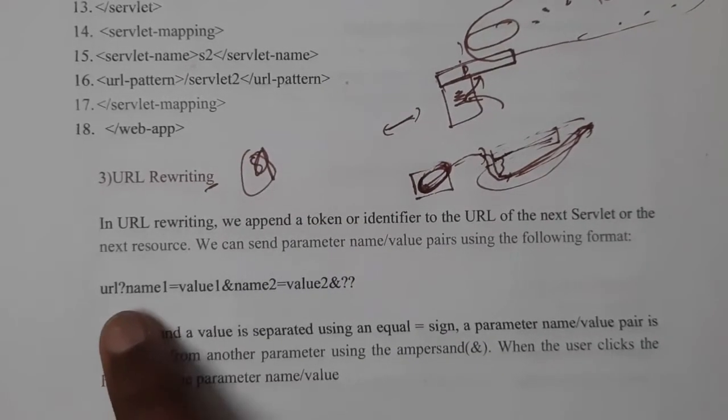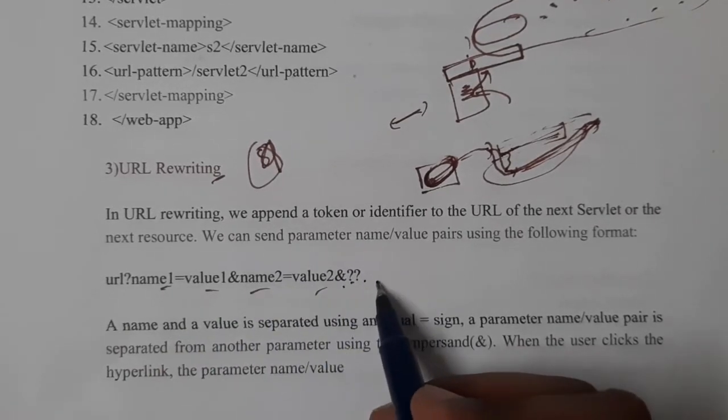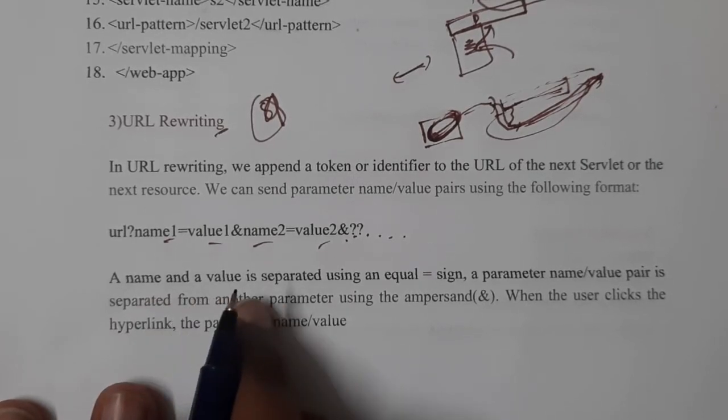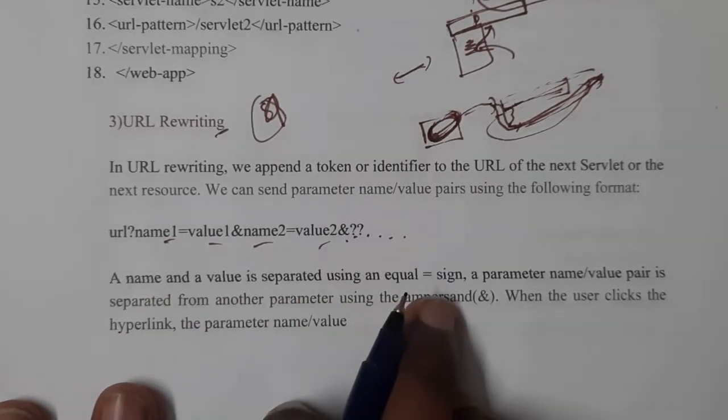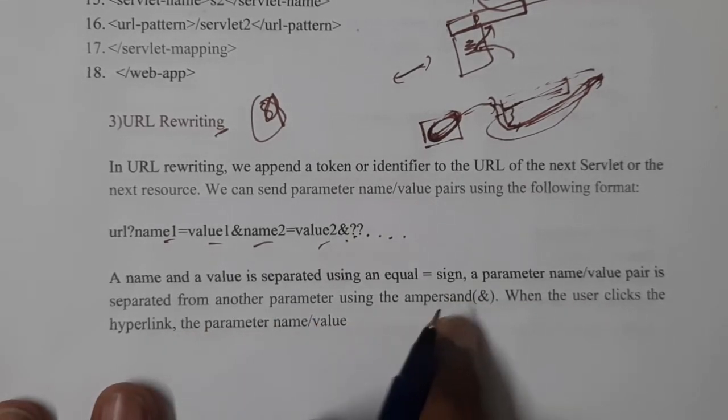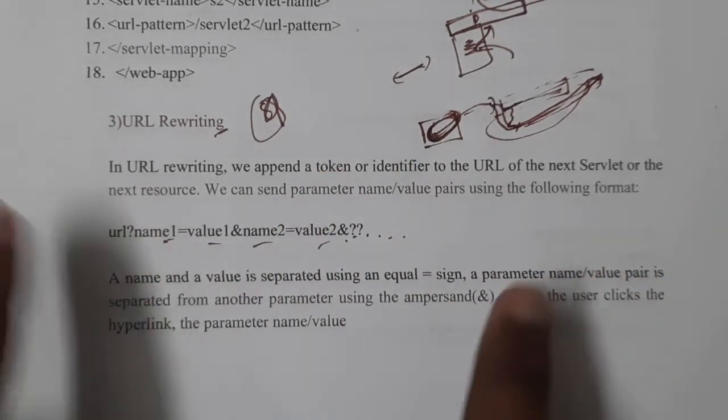It will be in this way: name1=value1&name2=value2 and it continues. A name and value is separated using equal to sign. A parameter name is separated from another parameter using an ampersand symbol. You will be using them to separate two parameters.